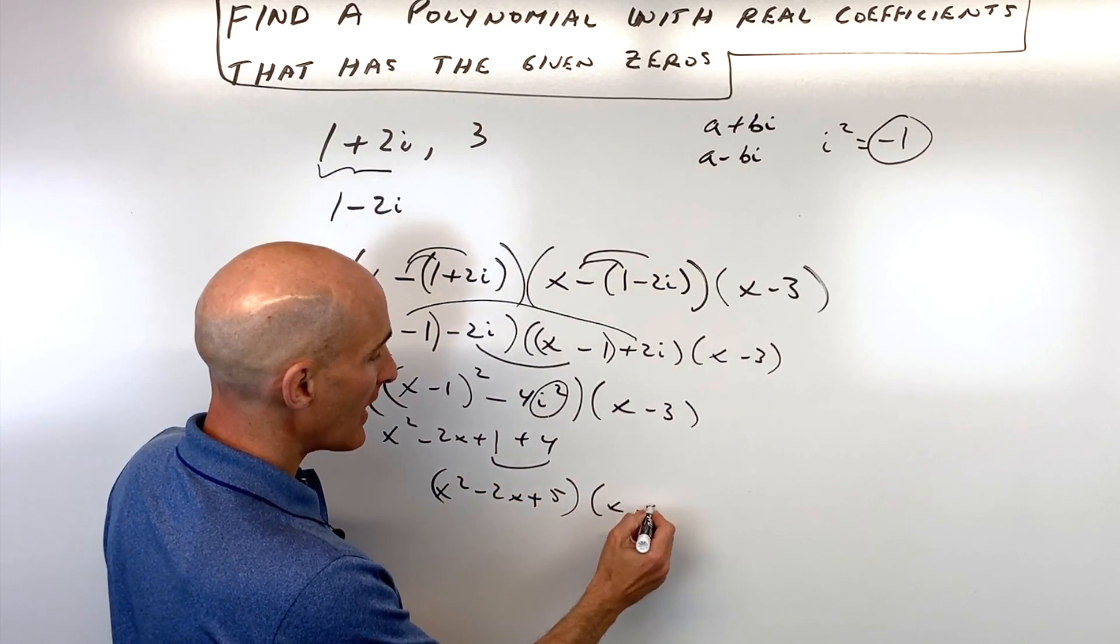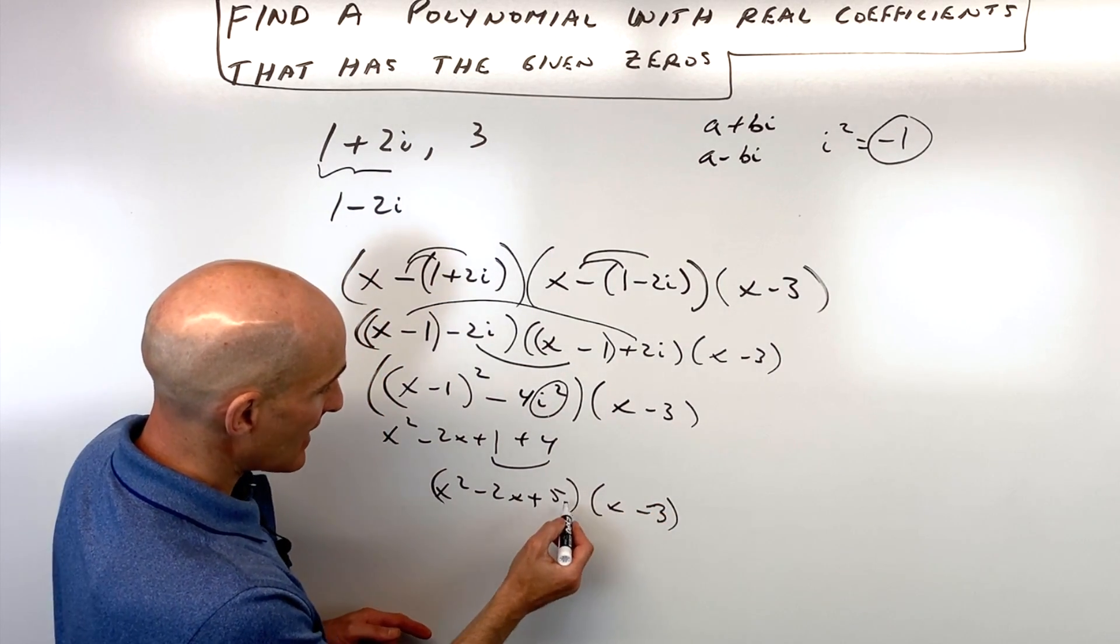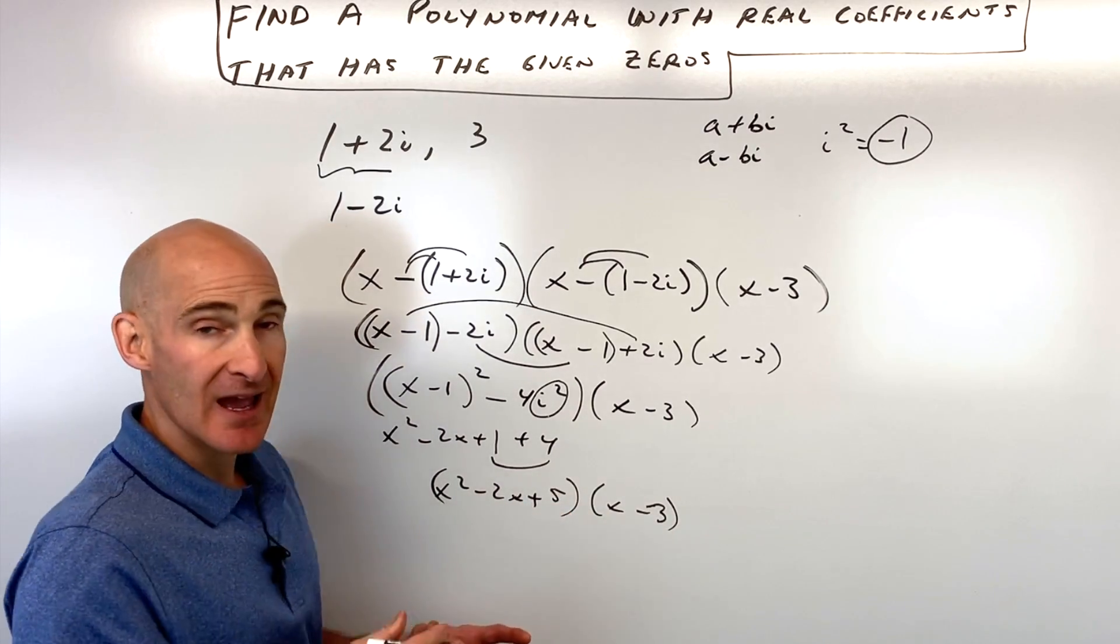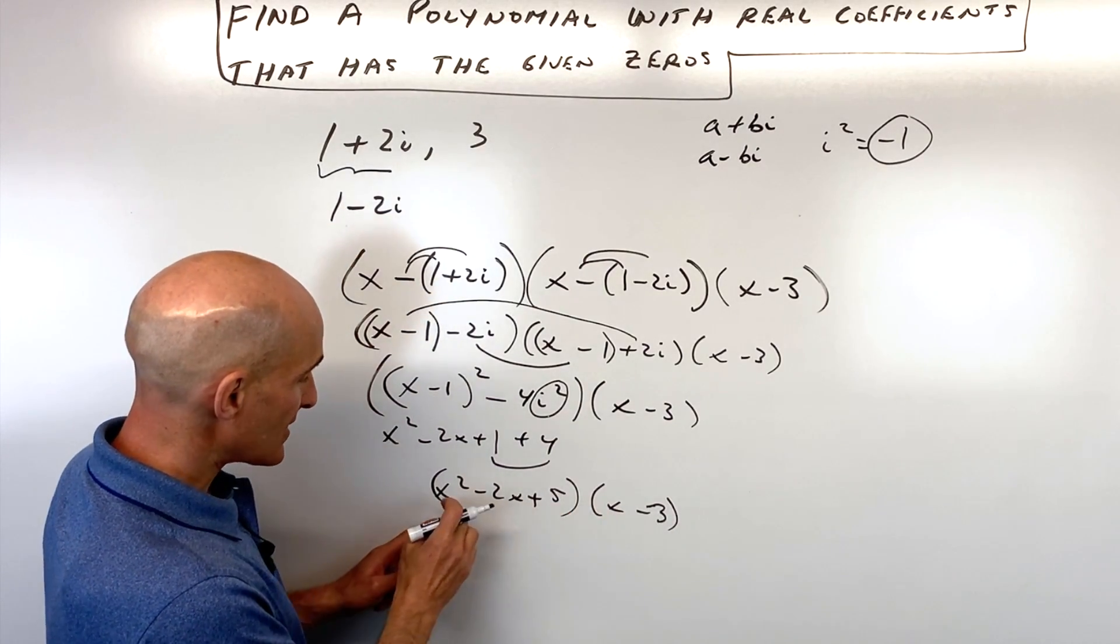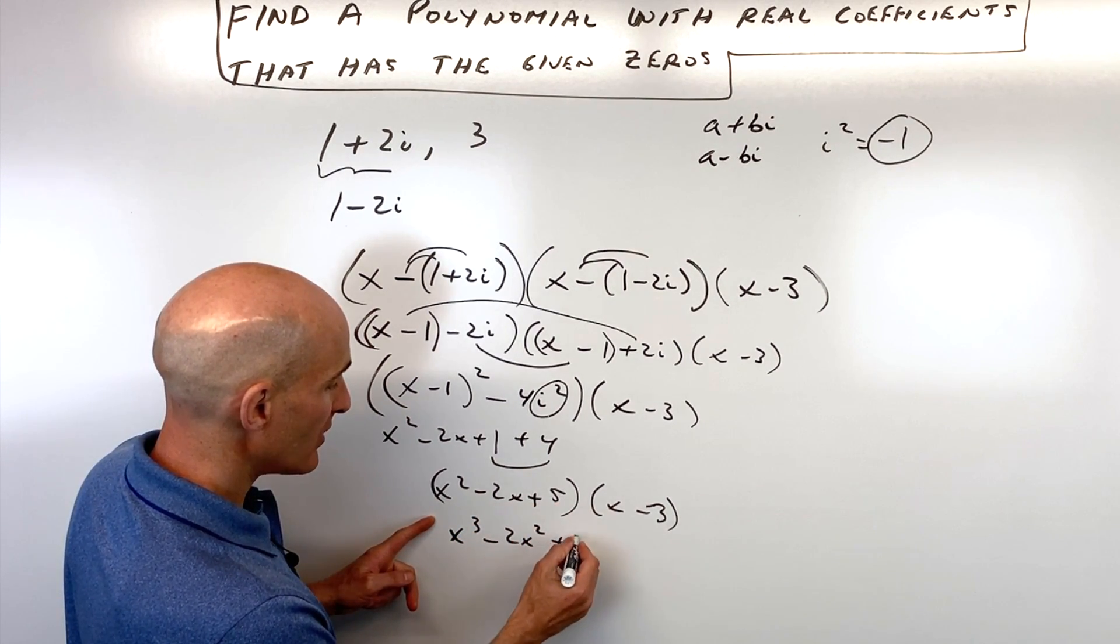Then all we have to do is multiply by x minus three. So what I'm going to do here is I'm just going to take the x and distribute to all three of these and the negative three distribute to all three of those and then combine like terms. So x times x squared is x cubed minus two x squared plus five x.